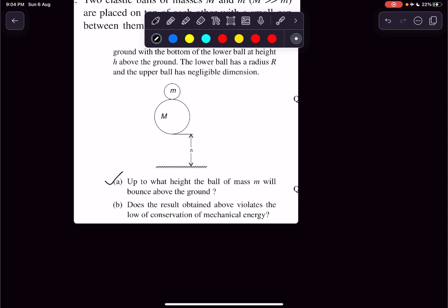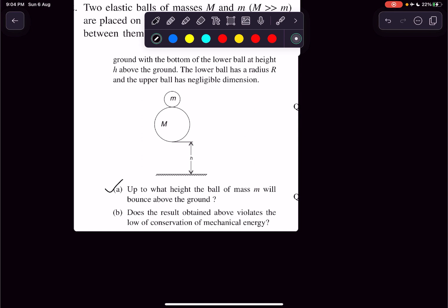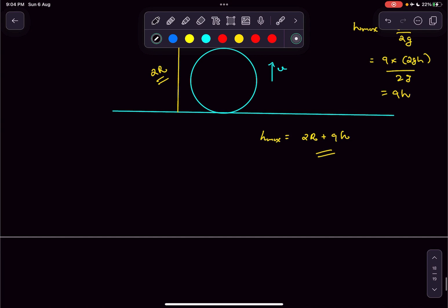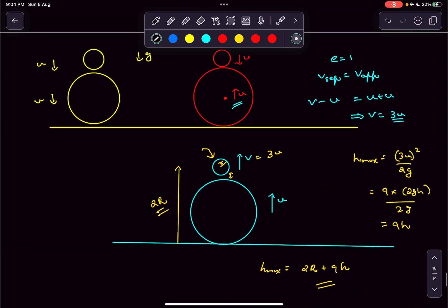Now, option B asks us does this violate the law of conservation of mechanical energy? And why? So what is the question basically? Initially the mass small m is at a height of h plus 2r from the ground, whereas finally it's reaching a height of 2r plus 9h. So the question is why is that?